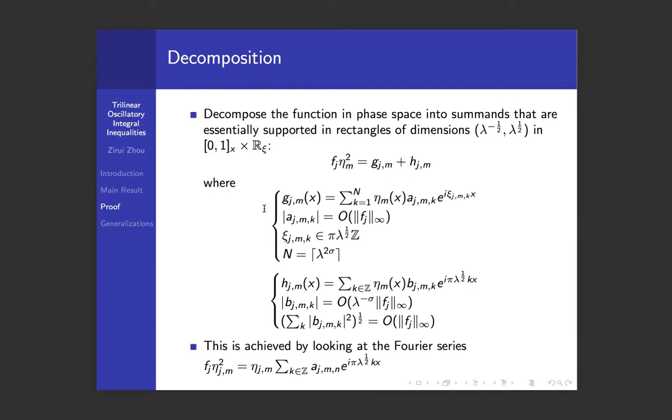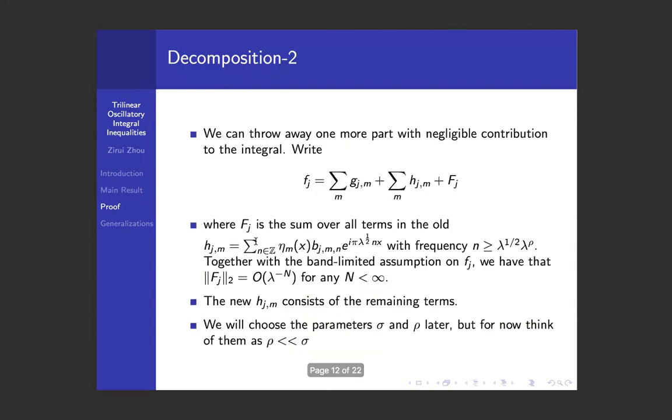We shall exploit this dichotomy later in the proof. Another technicality is that by the band-limited assumption on f_j, it is possible to throw away the tail terms in h_j. So actually h_j, we can also assume that h_j has a bounded number of terms, although the bound here is much worse than the number of terms in g_j.